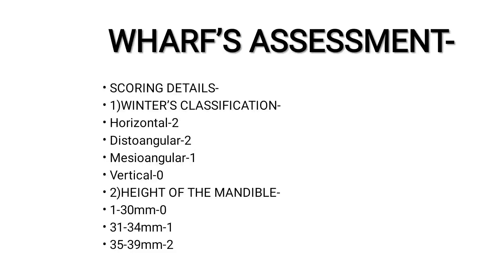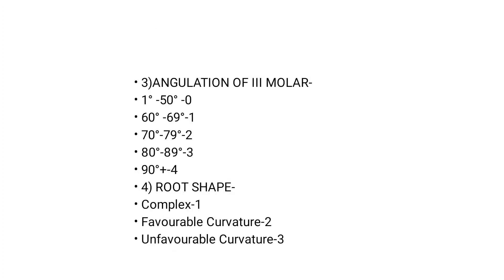A stands for the height of the mandible. As the height of the mandible increases, the difficulty increases, so the score also increases. Height of 1 to 30 mm is scored zero, 31 to 34 mm is scored one, and 35 to 39 mm is scored two.